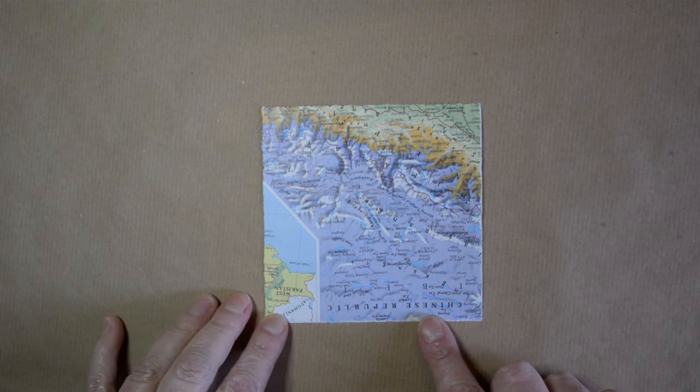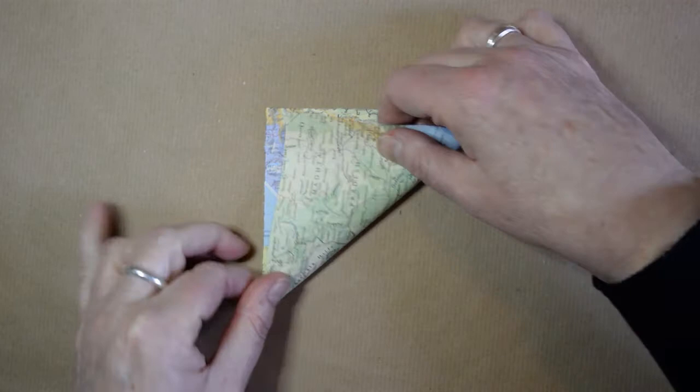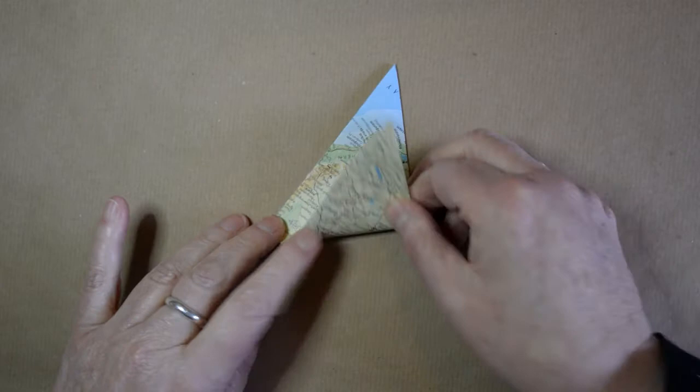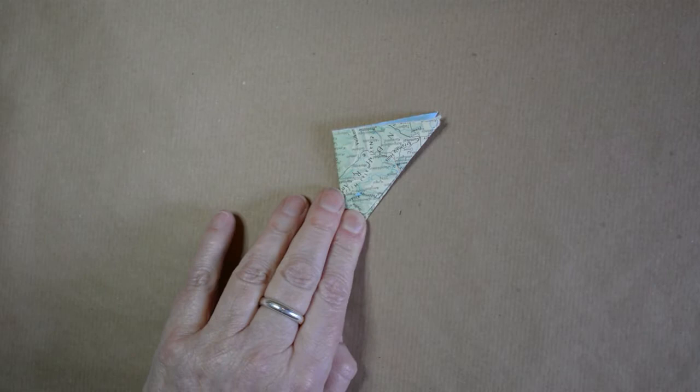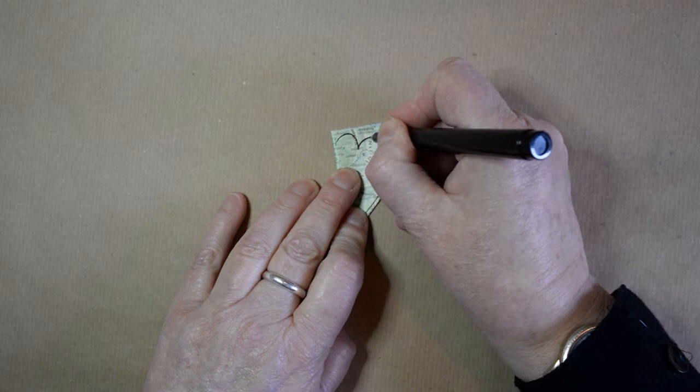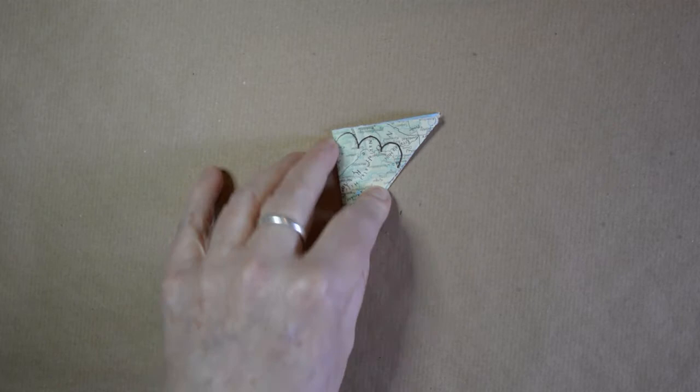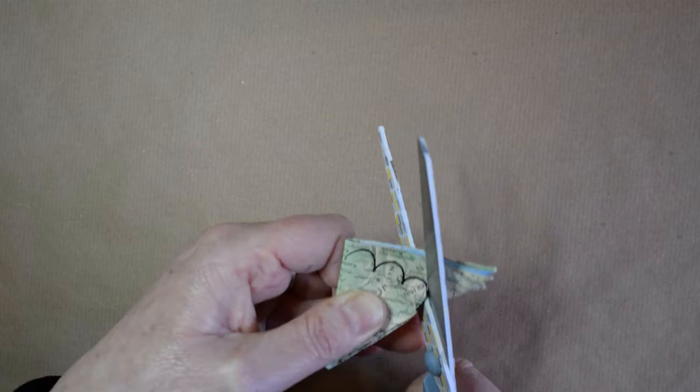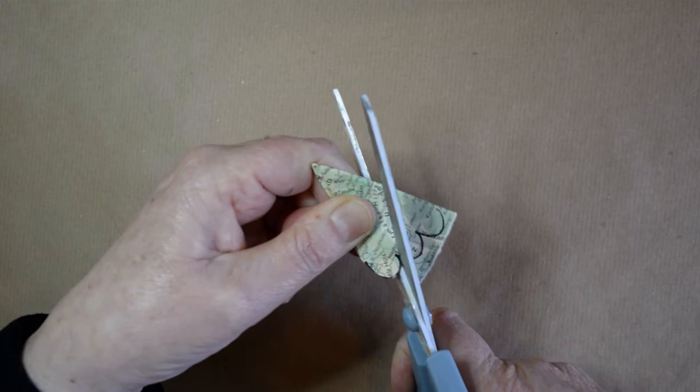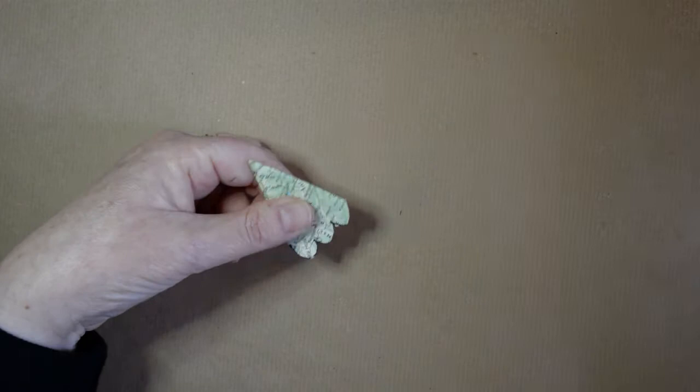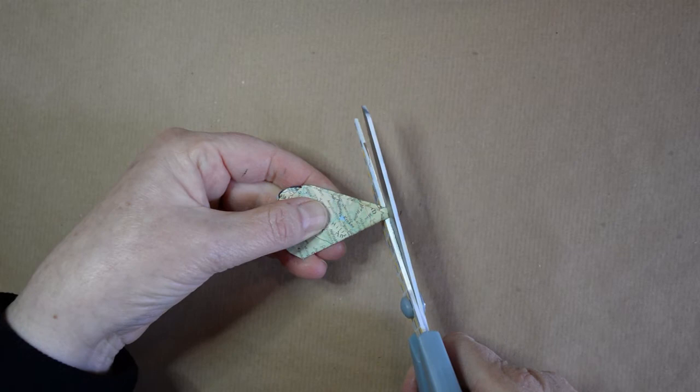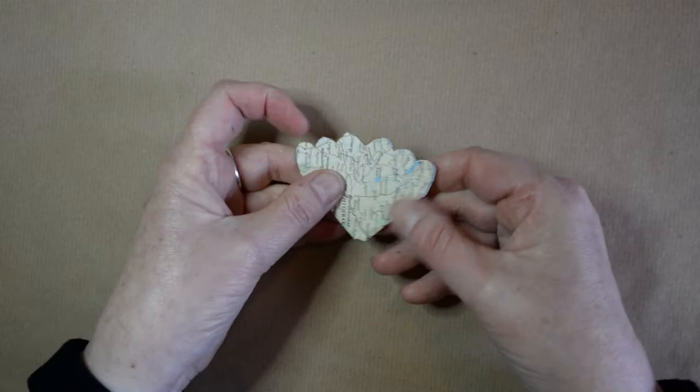Start with your square 11 centimetres by 11 centimetres and fold it once diagonally, twice, and the third time. I'm going to draw the petal design with felt tip and cut it out. Cut a little bit off the point but not too much, just a tiny little snip off the point. You can always cut a little bit more off later. And unfold it.